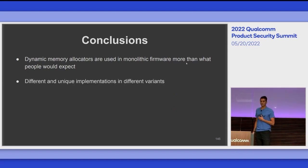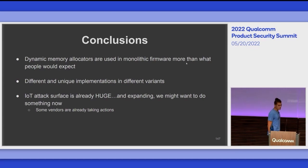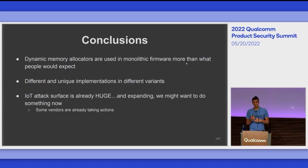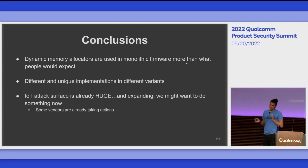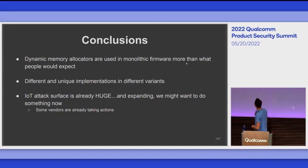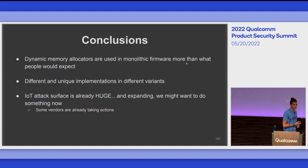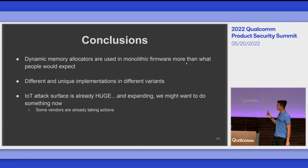There are quite different and unique implementations out there — sometimes people come up with new heap implementations from scratch because they feel current ones aren't good enough (maybe for performance), but then they compromise security. The IoT attack surface is already huge and expanding every year. Right now the biggest concern is default credentials for IoT, not heap memory corruption, but I'd like this attack surface to get attention from CISOs and the community to act now and avoid having all these devices vulnerable to memory corruption attacks in the future.